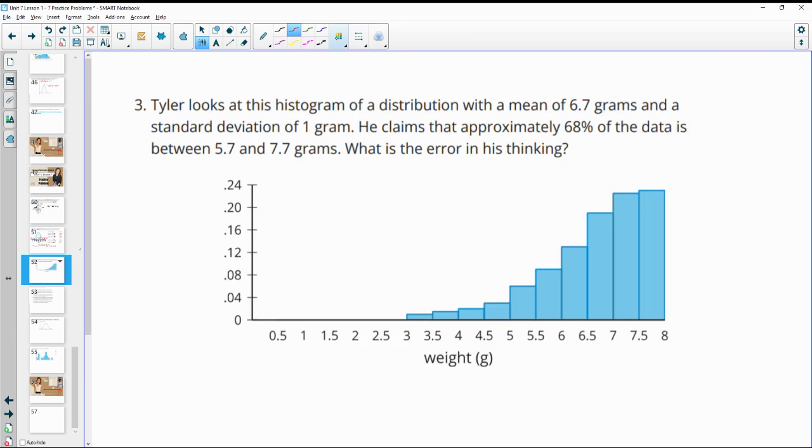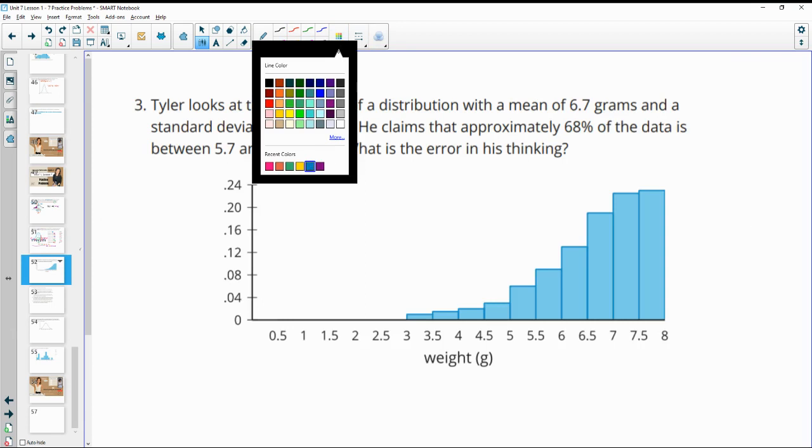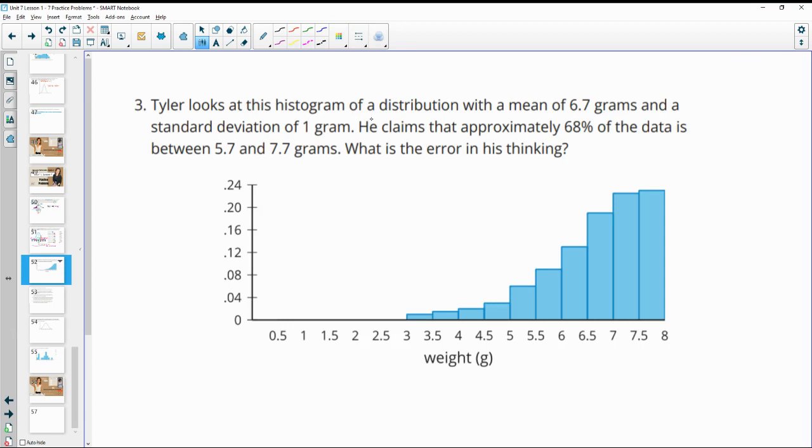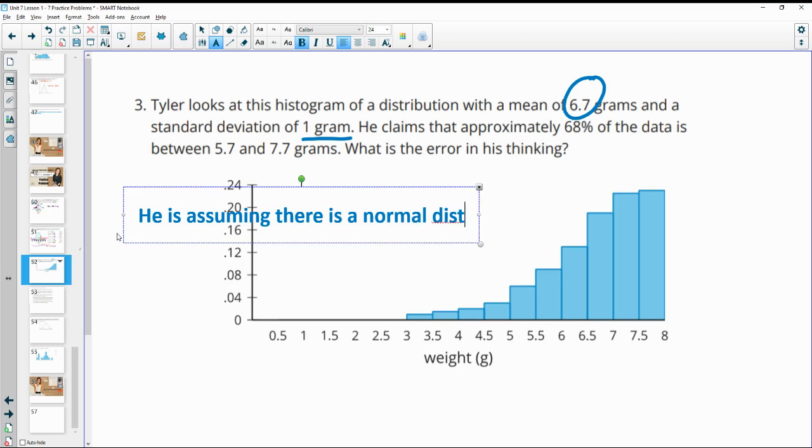Number 3: Tyler looks at this histogram of a distribution. And it has a mean of 6.7 grams and a standard deviation of 1 gram. So he claims that 68% of the data is going to be between 5.7 and 7.7, which is taking the mean plus 1 and minus 1. So one standard deviation. So what's the error in his thinking? So these other curves have told us that there's a normal distribution. So he's assuming there is a normal distribution of the data.